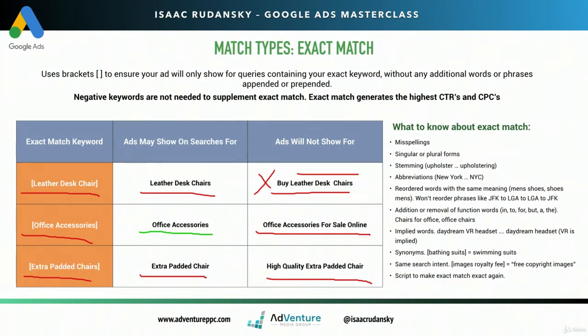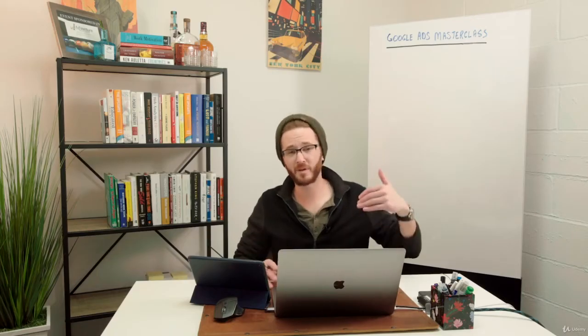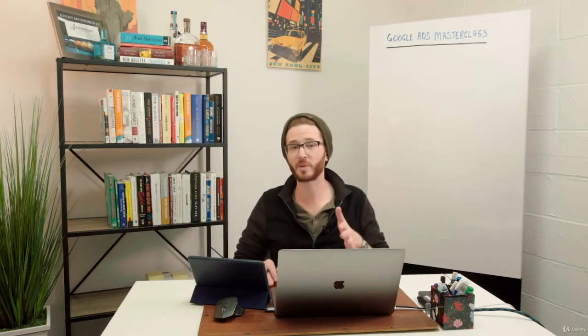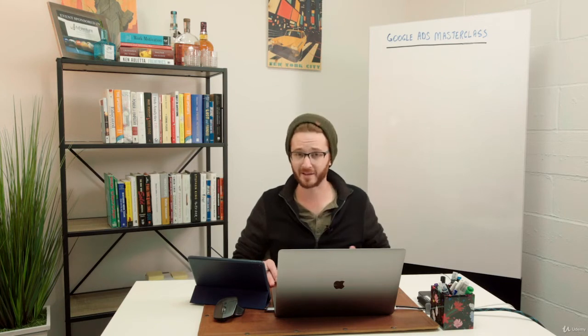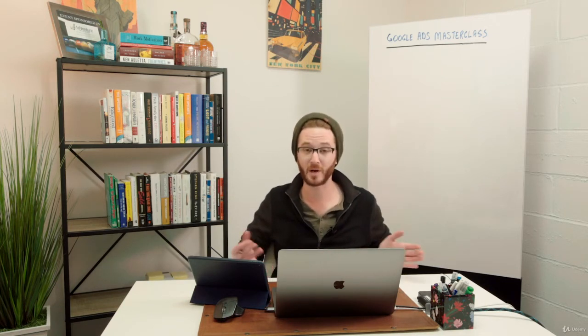Luckily, there's a script written by Daniel Gilbert and his team at Brain Labs to make exact match exact again. The script mines your search terms report constantly — every day, every hour — adding more negative keywords until you're left with just your exact match versions of your keywords. So there is a script available to make exact match exact again, which is really neat and worthwhile checking out.